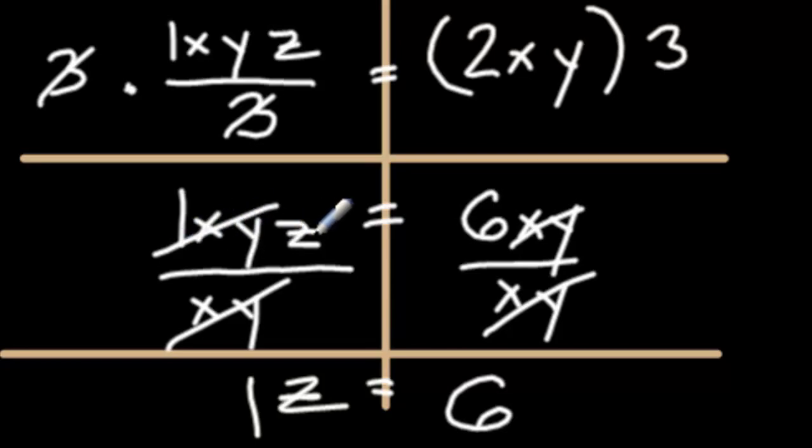Since this is all multiplication going on, you just want to cancel out the variables that you don't want, xy. If I divide 6xy by xy, the x and y cancel out on the right side too.